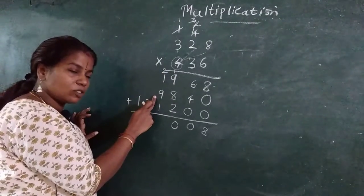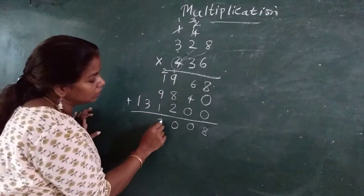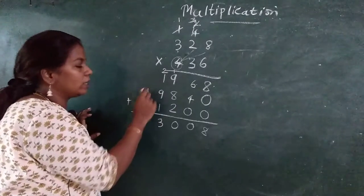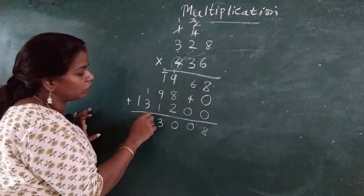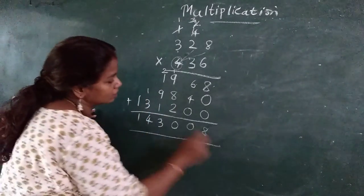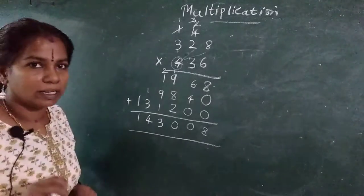3 plus 9, 12. 12 plus 1, 13. 3 here, carry 1. 1 plus 3, 4. 1 as well. What I did? I will just repeat.